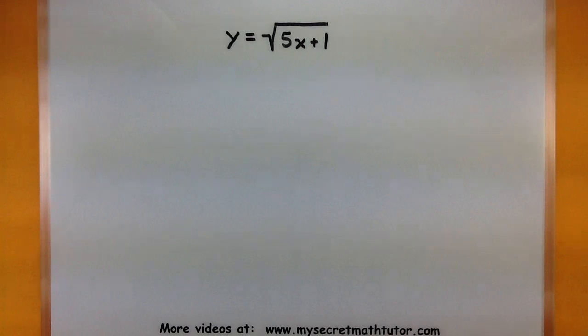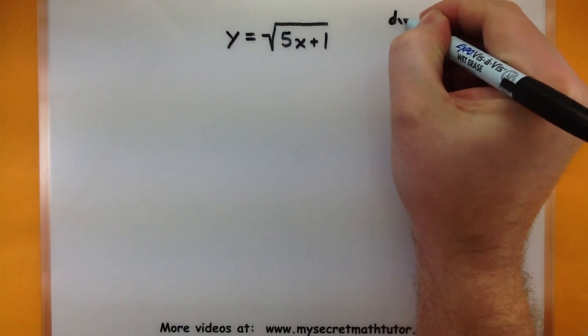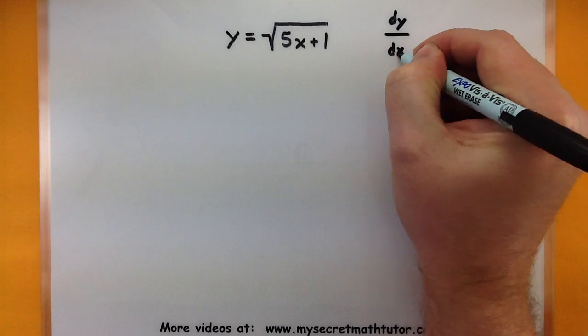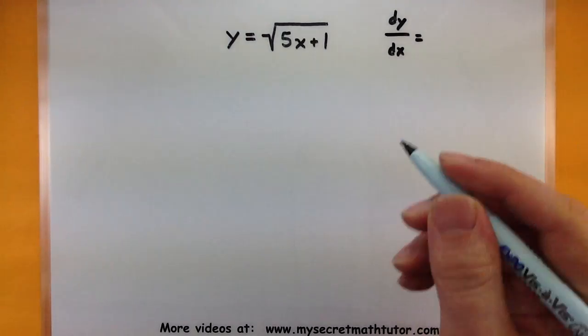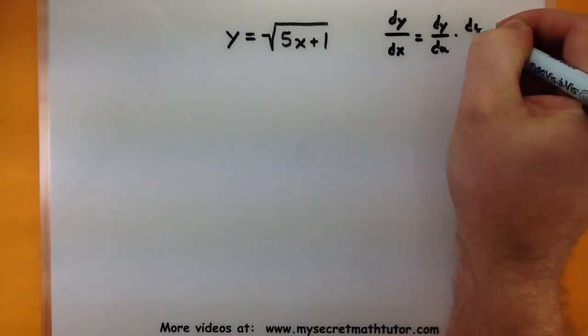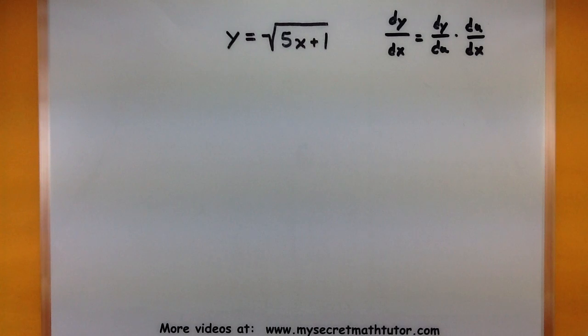So to do this with Leibniz notation, essentially what we want to think of is how we can take the derivative of y with respect to some other variable, we're going to do it with respect to x, by really breaking it up and taking the derivative of y with respect to u, and then the derivative of u with respect to x.